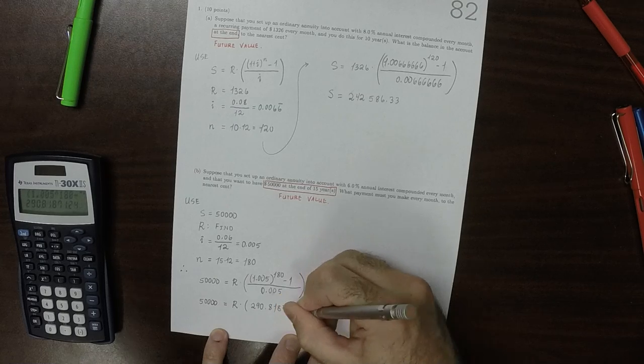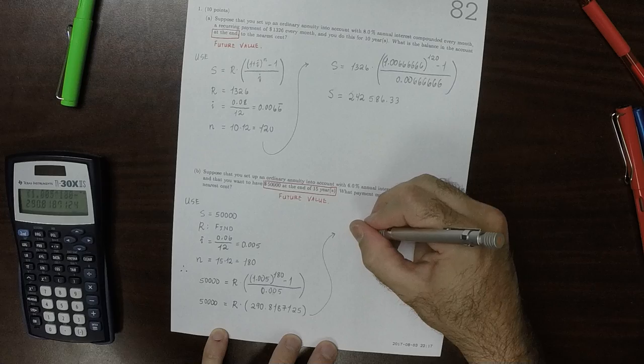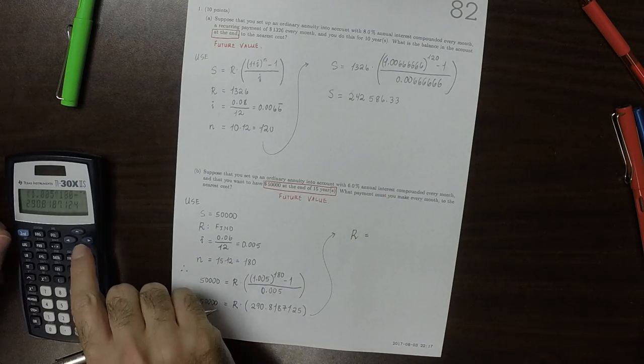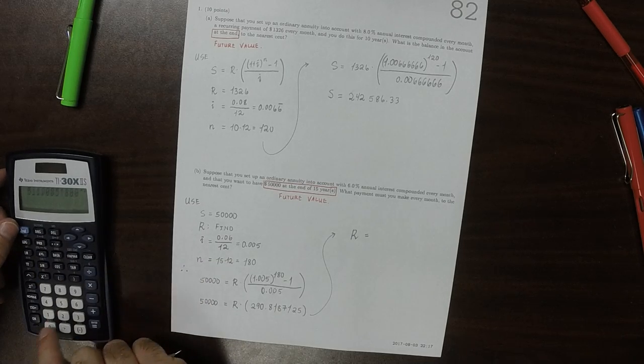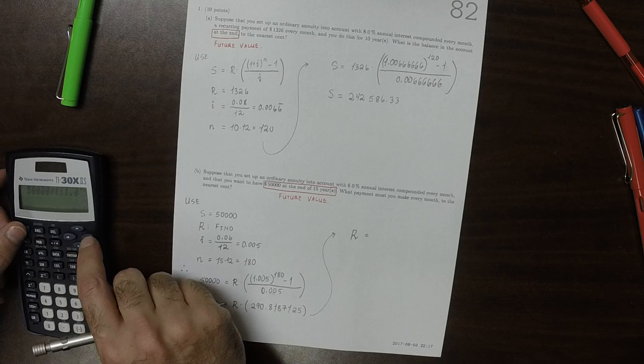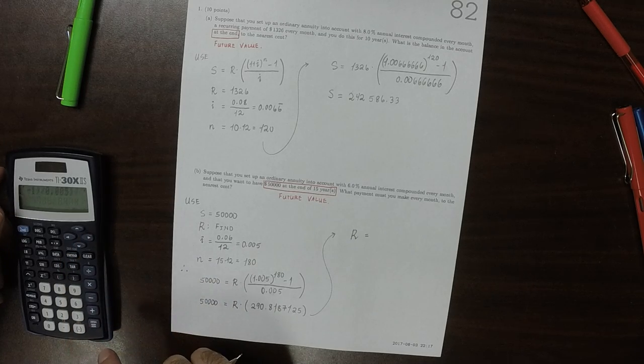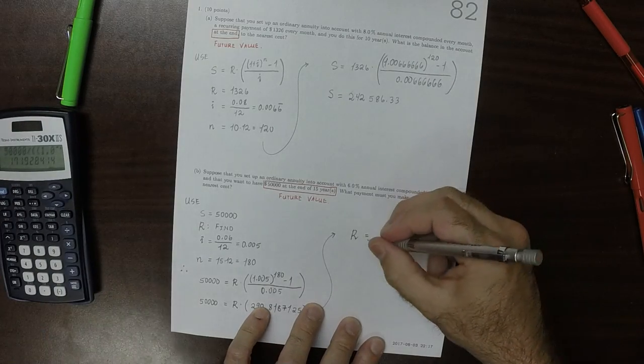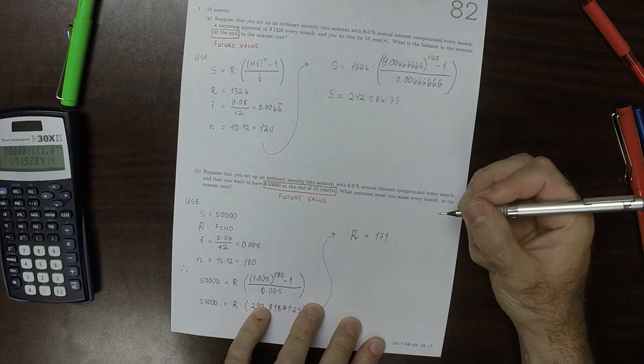290.8187124. So we can solve for R by dividing 50,000 by that number, and rounding to the nearest cent, that's $171.93.